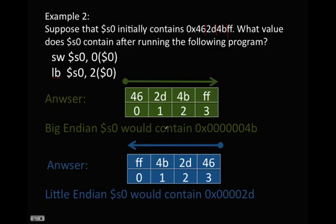So what would S0 contain? Well, we look at this. This is an offset of 2, so we go 0, 1, 2. So this is 4B. And then we sign extend it into the hexadecimal number given here. So that's Big Endian.